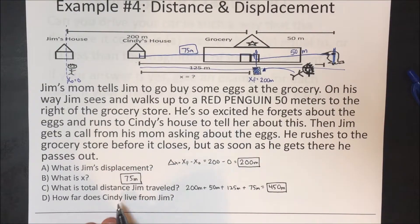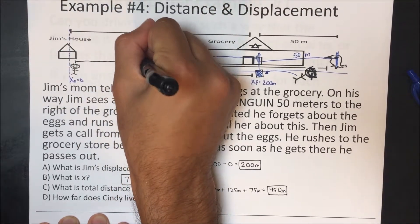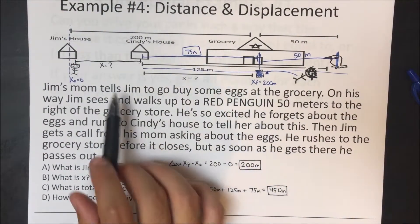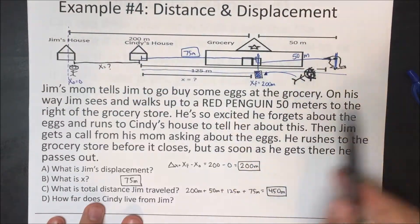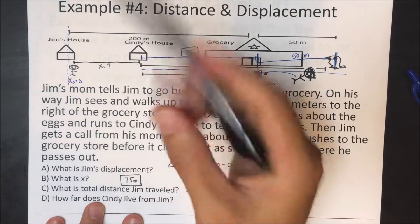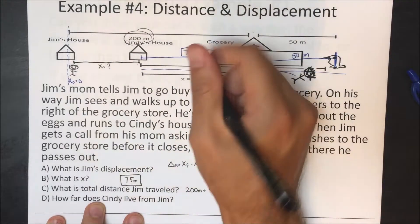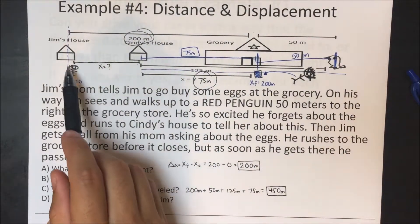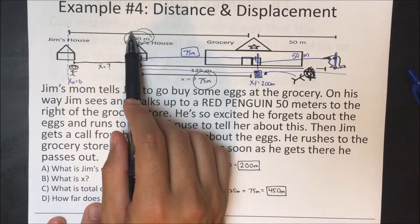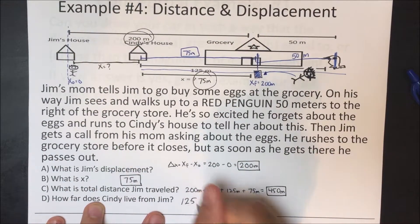Last question: how far does Cindy live from Jim? We want the distance from Jim's house to Cindy's house. We know Jim's house to the grocery store is 200 meters, and Cindy's house to the grocery store is 75 meters. So Jim's house to Cindy's house is 200 minus 75, which gives us 125 meters.